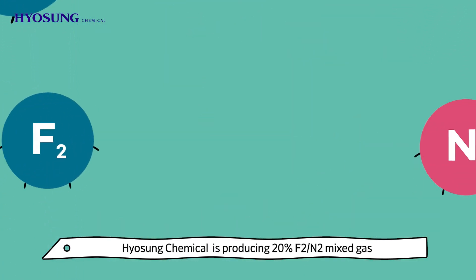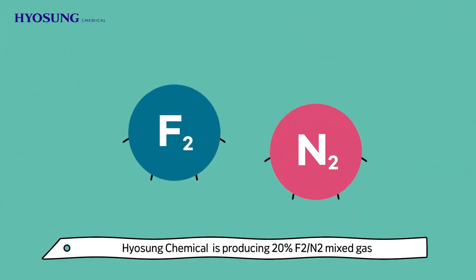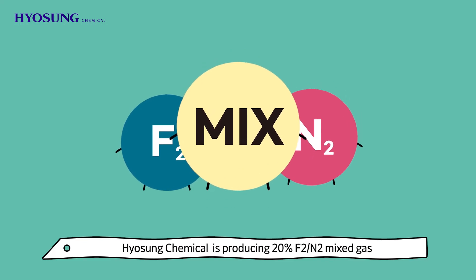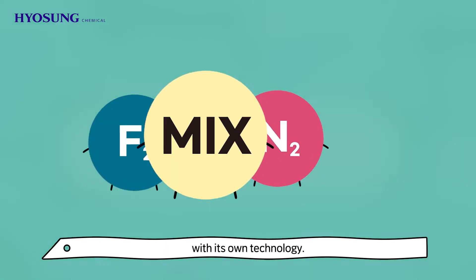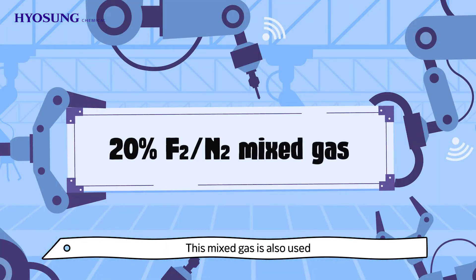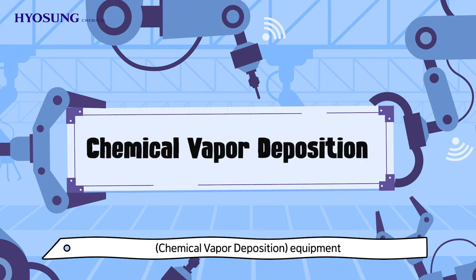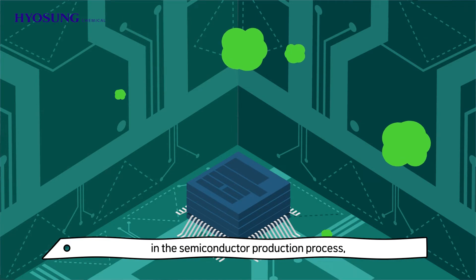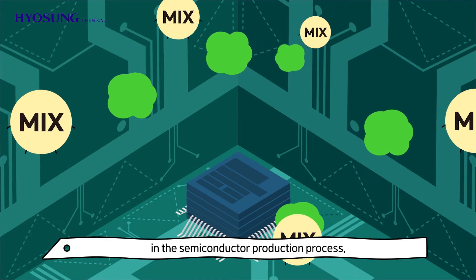In addition to NF3, Hyosung Chemical has invented 20% F2N2 mixed gas with its own technology. This mixed gas is also used as a cleaning gas for the chamber of CVD chemical vapor deposition equipment in the semiconductor production process, showing excellent quality and performance.